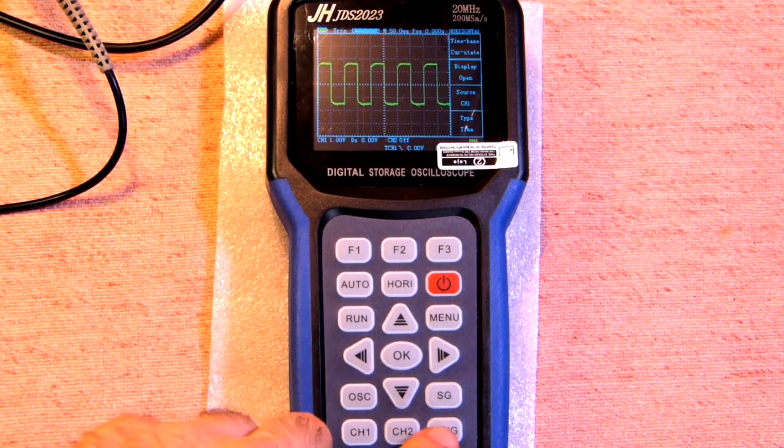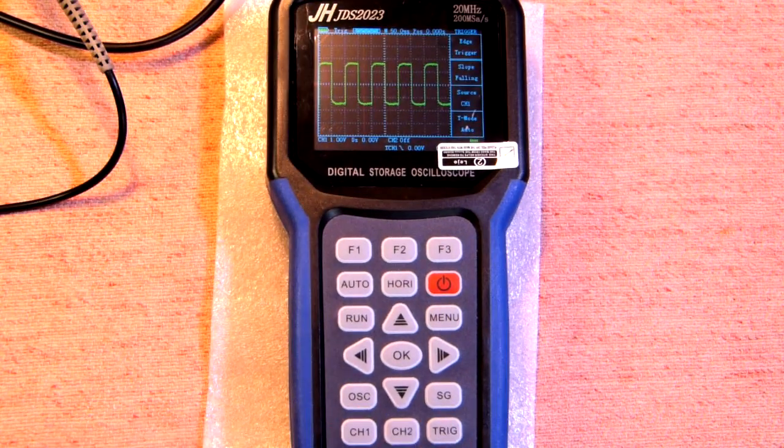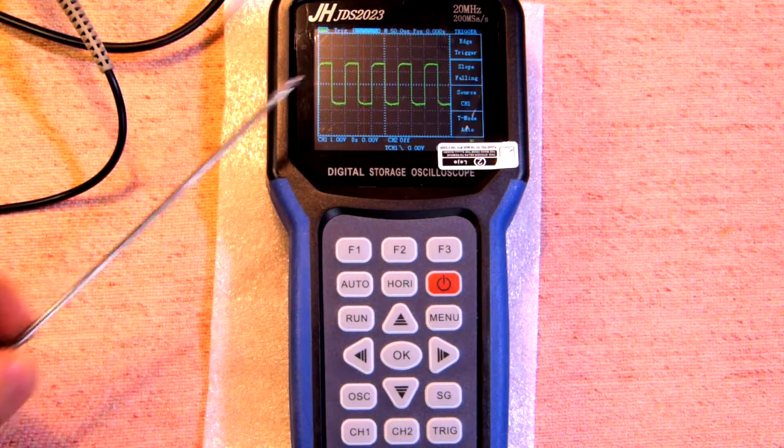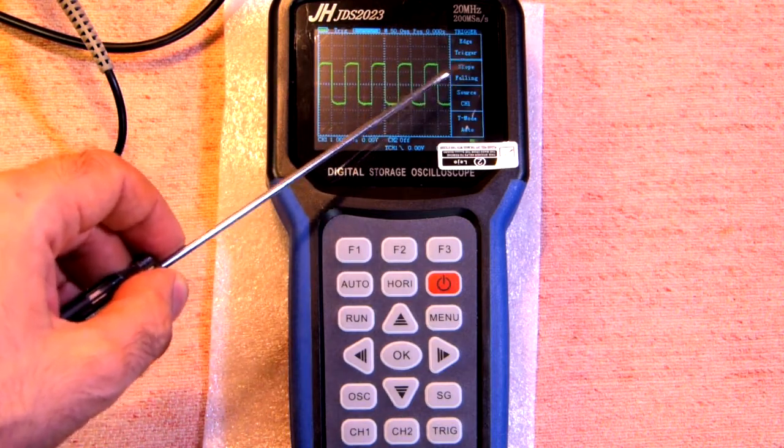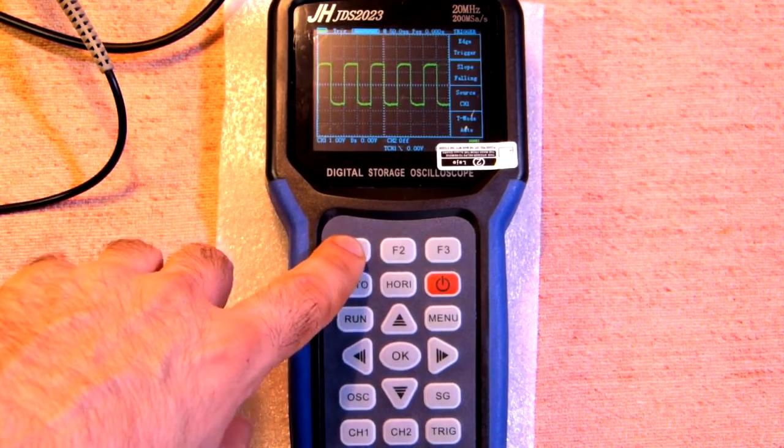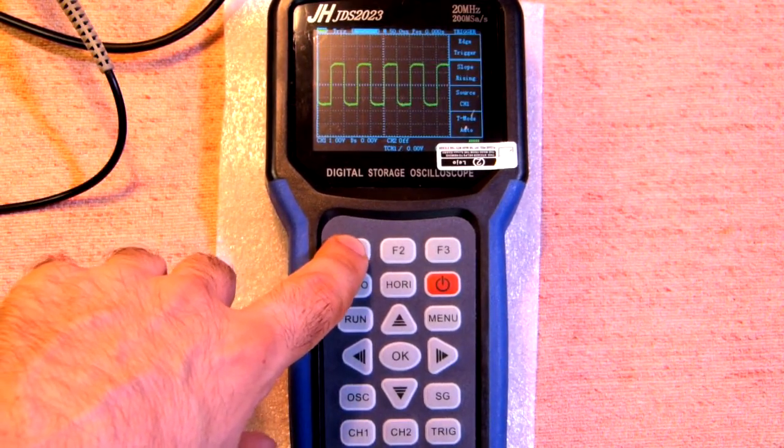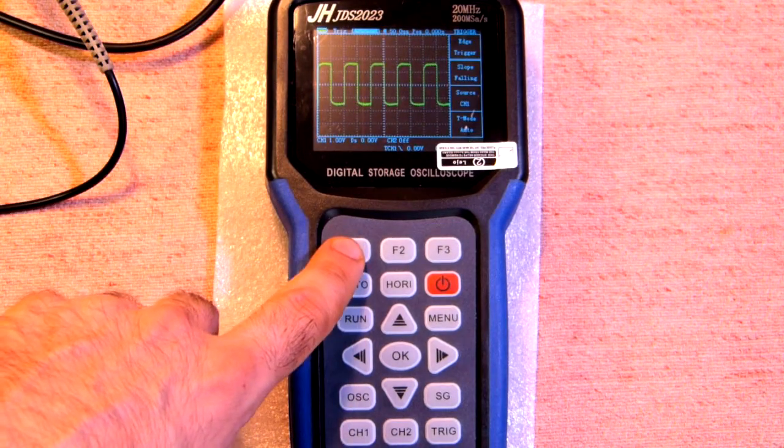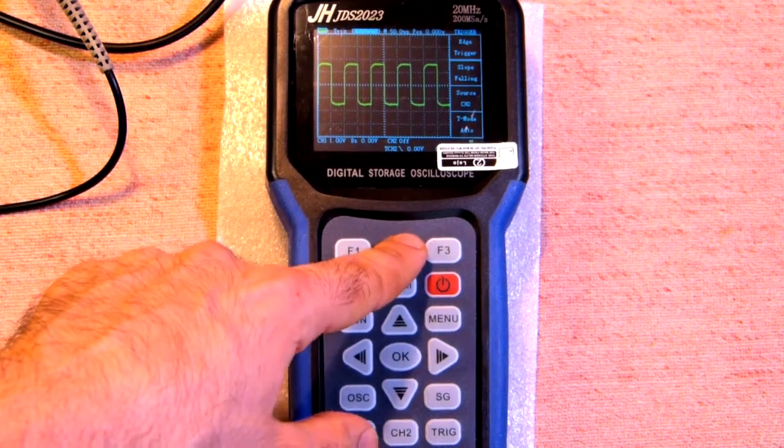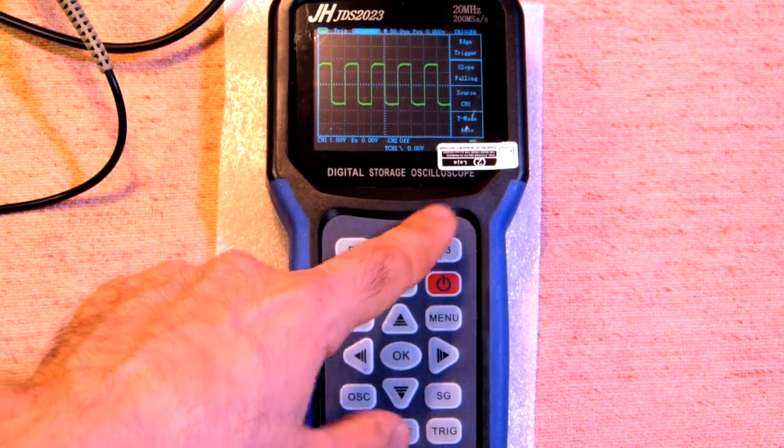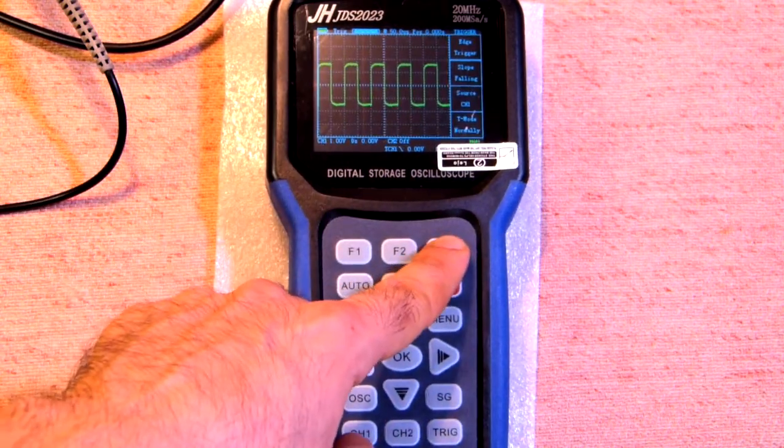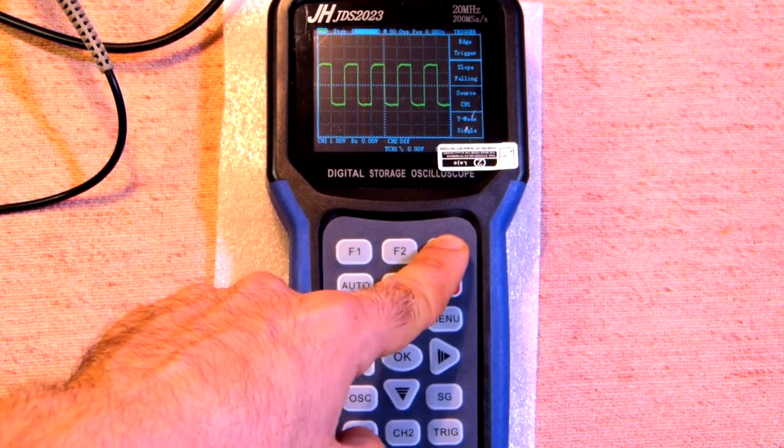Trigger mode can be changed here. So edge trigger we have here by means of this function slope you can change raising and falling synchronization. Synchronization channel is channel 1. You can change it. Channel 2. Channel 1. And T mode. Trigger mode is auto. Also normally and single.